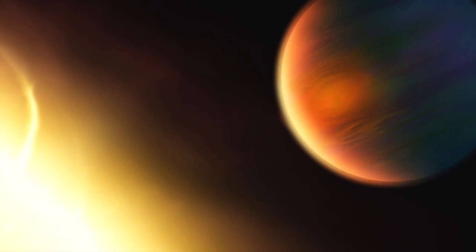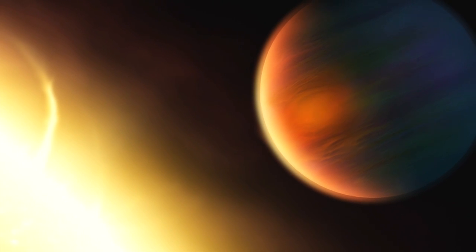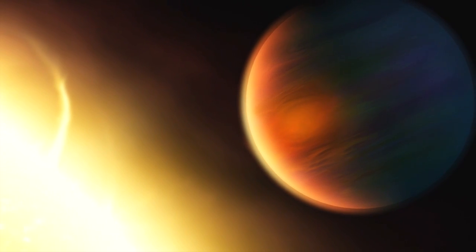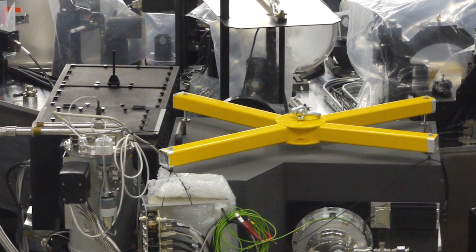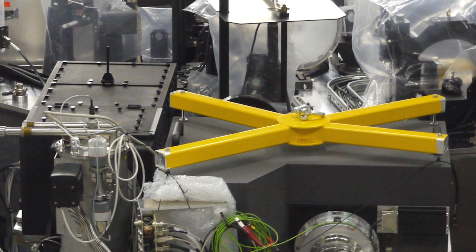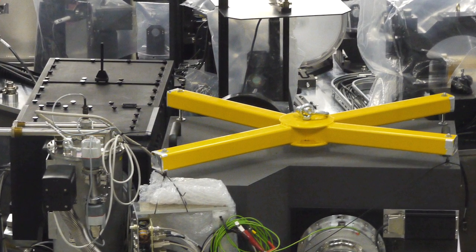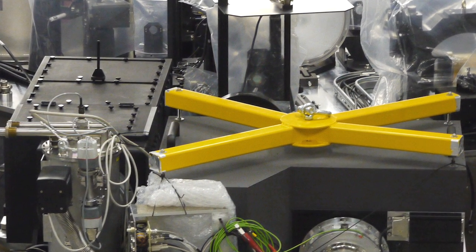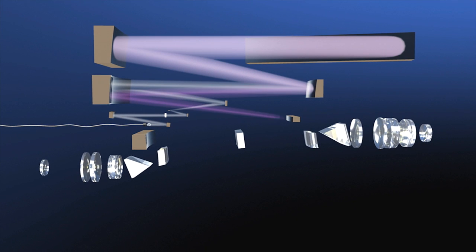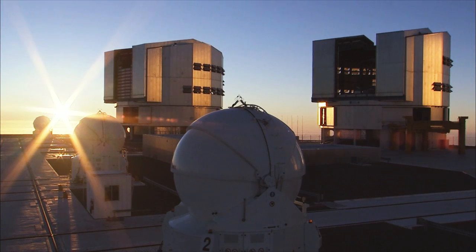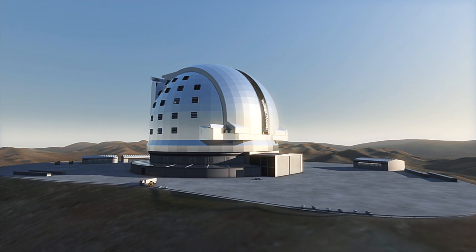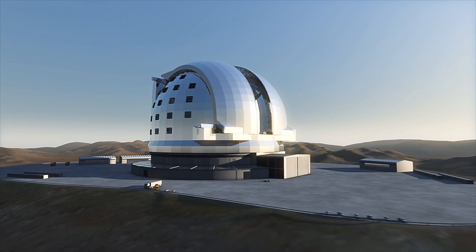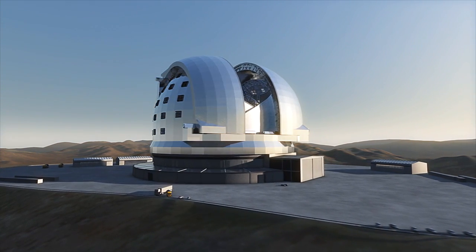Gas giants and sauna worlds are inhospitable to life, but the hunt is not over yet. Soon, the new Sphere instrument will be installed at the VLT. Sphere will be able to spot faint planets in the glare of their host stars. In 2016, the ESPRESSO spectrograph will arrive at the VLT and greatly surpass the current HARPS instrument. And ESO's Extremely Large Telescope, once completed, may well find evidence for alien biospheres.